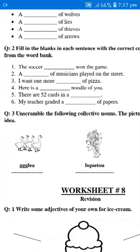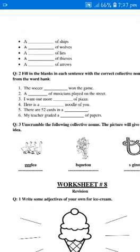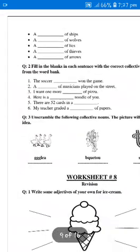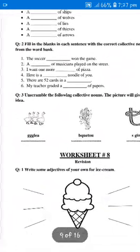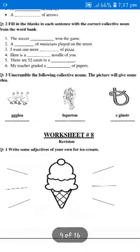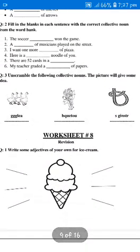Question number 3: Unscramble the following collective nouns. The picture will give some idea. First of all, you see the pictures and then you arrange these words.